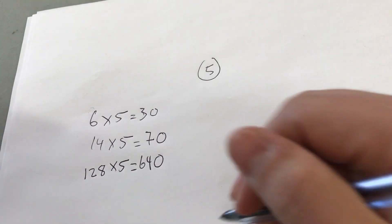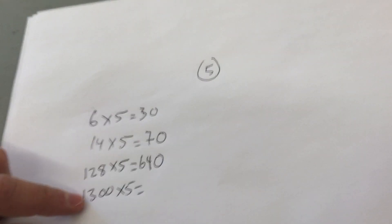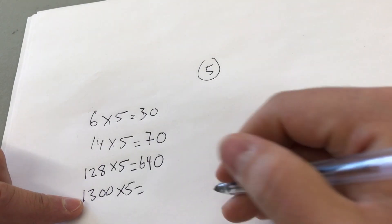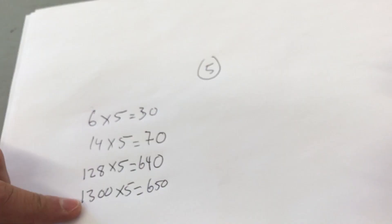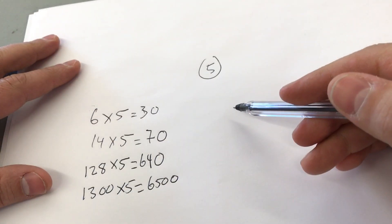Let's get an even bigger number. Let's do 1,300 times 5. Now half of 1,300 is 650, and then you simply add a 0 at the end. 6,500 is your answer. And it's literally that simple. It's that easy.